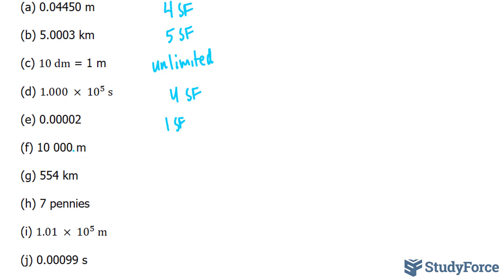And if you don't want to write it this way, you can write it in scientific notation. Much like in part D where we had 1.000 times 10 to the power of 5. So we could have written this as 1.000 times 10 to the power of 5 and that would be considered five significant figures.